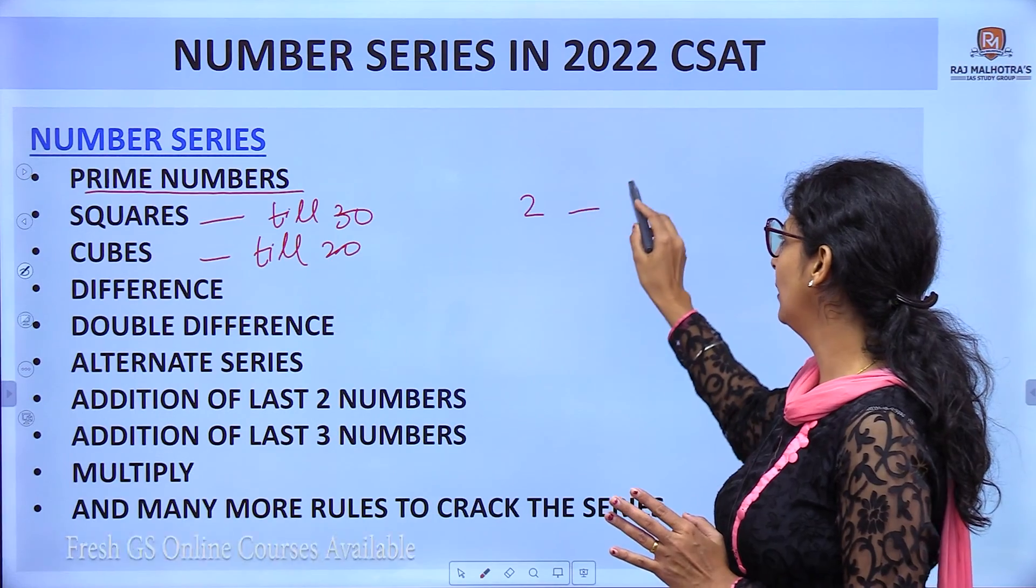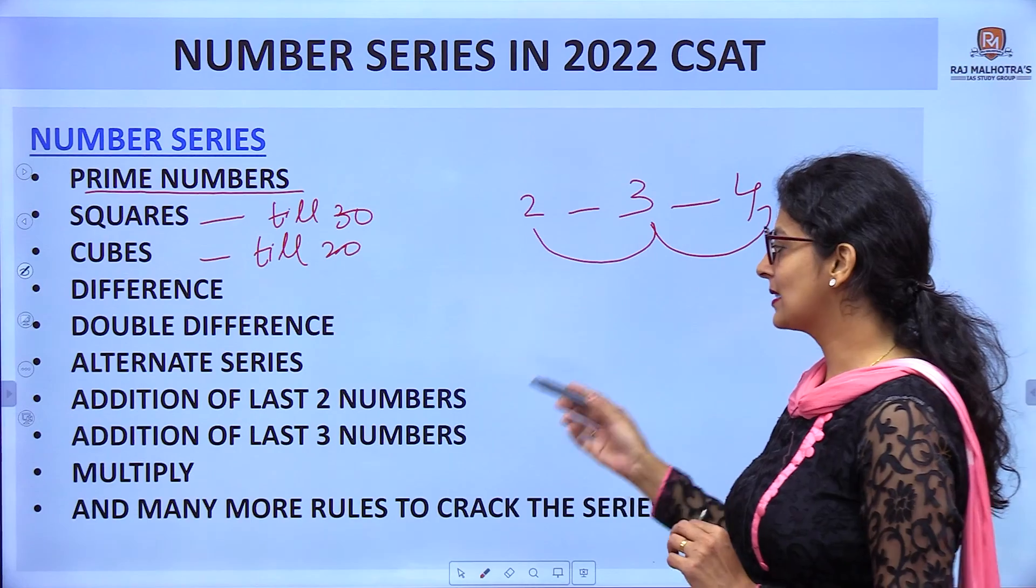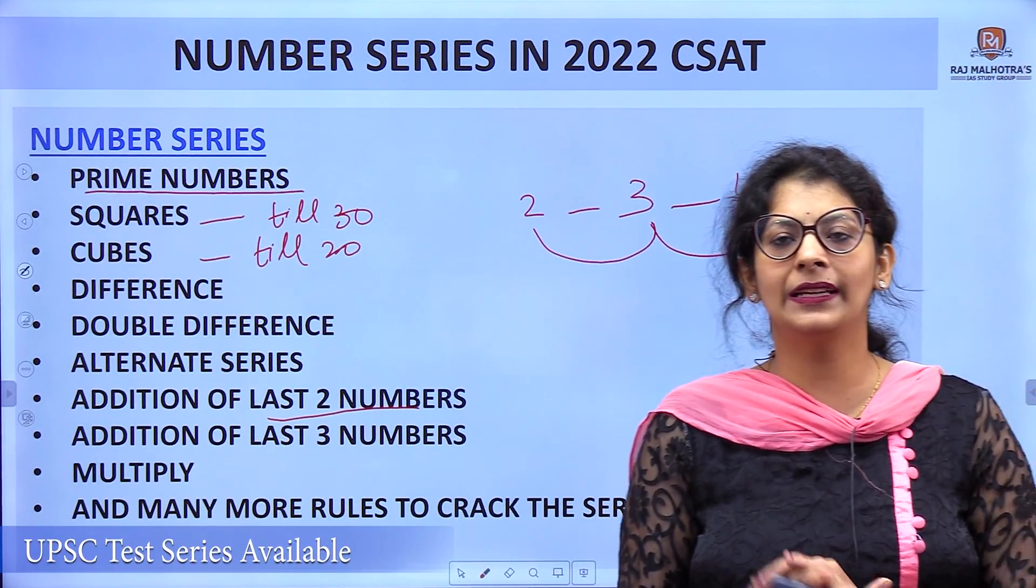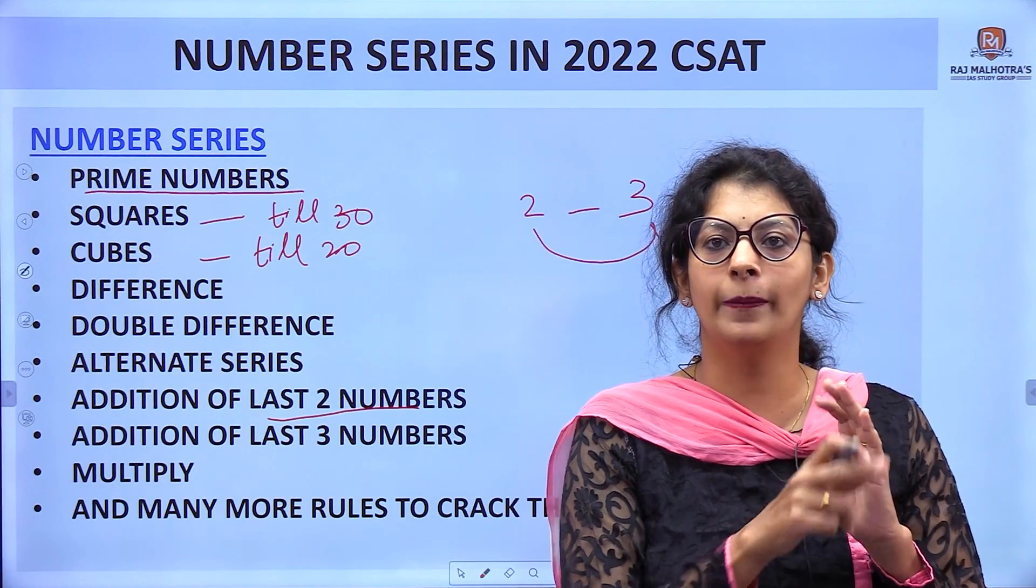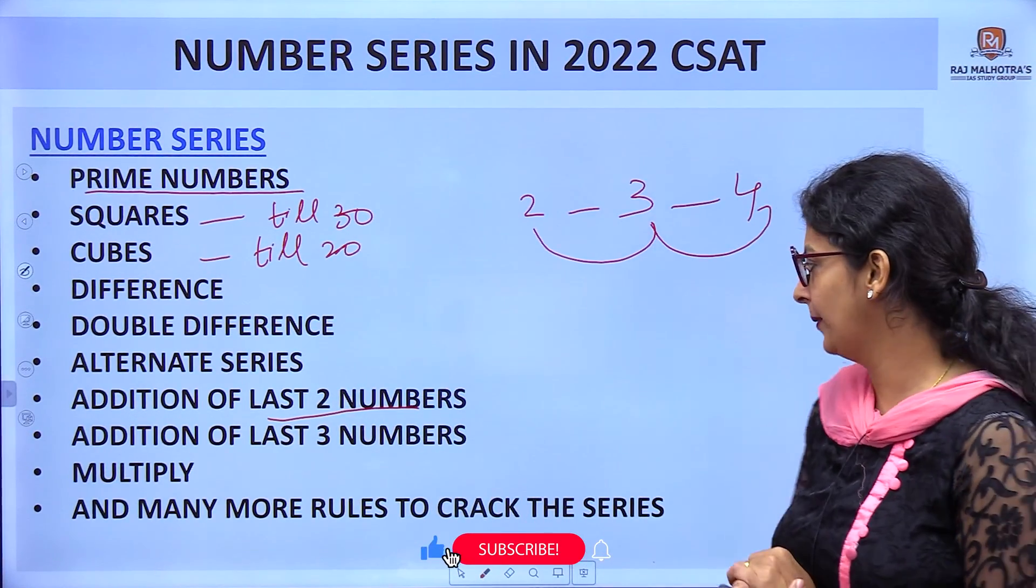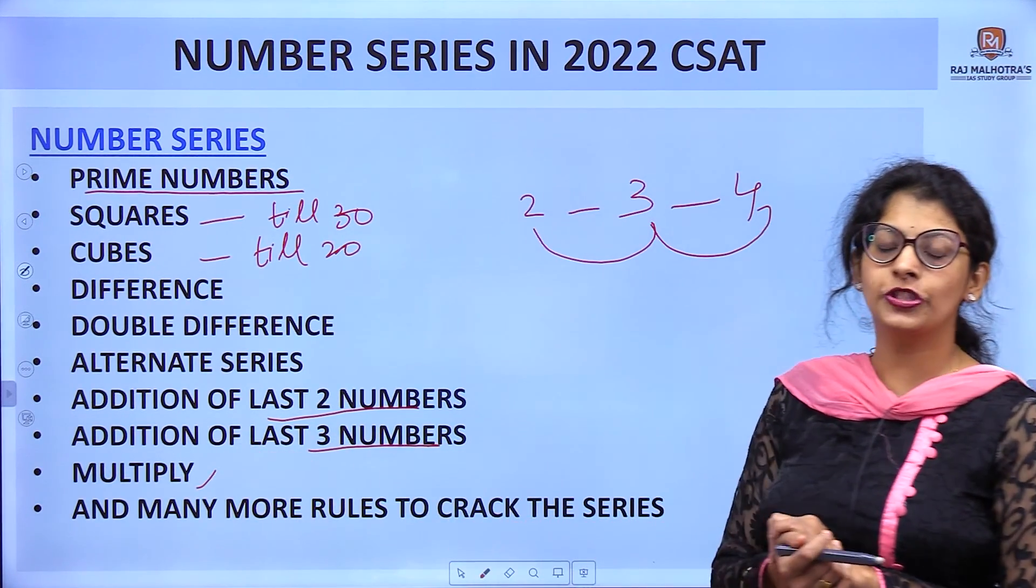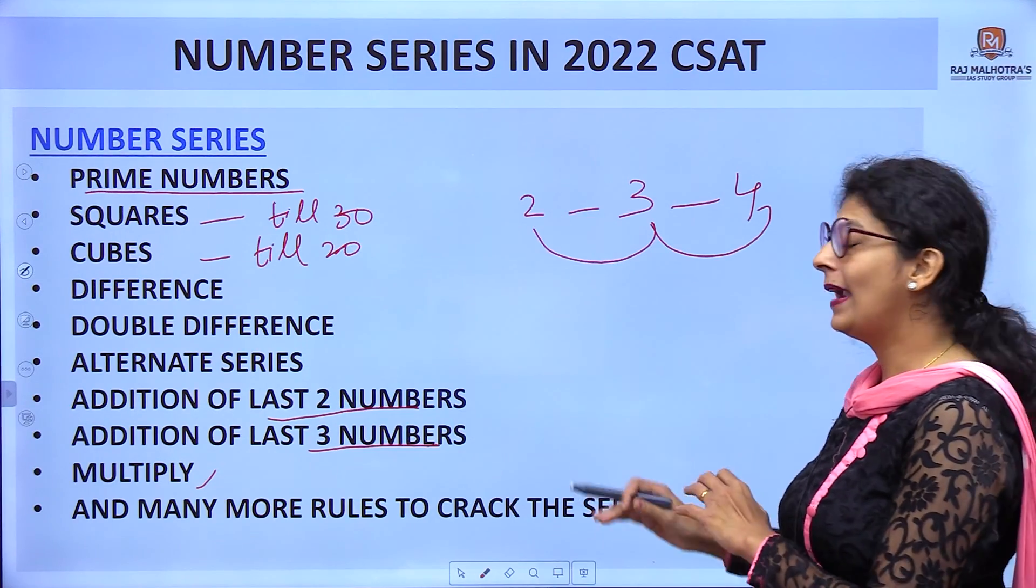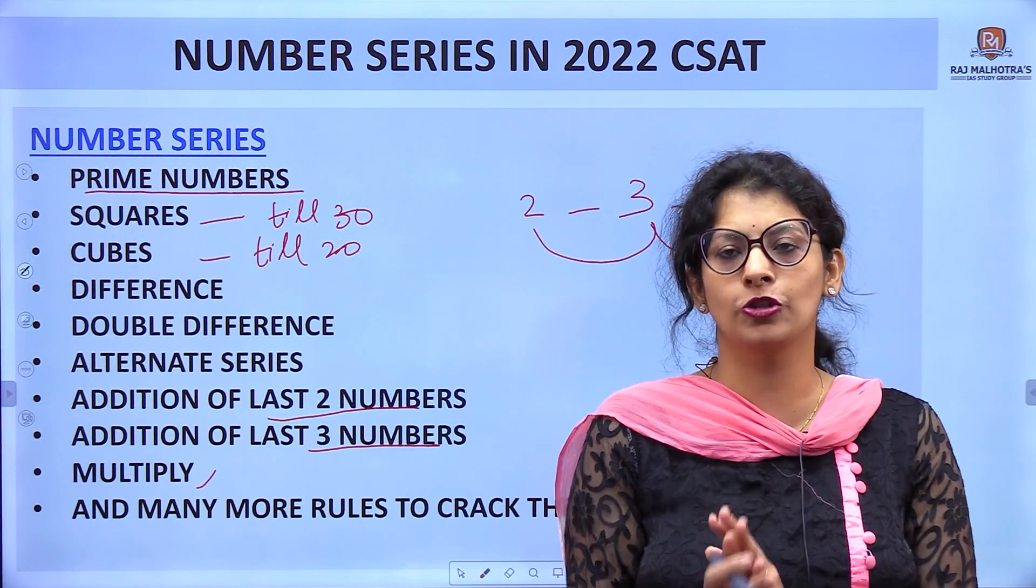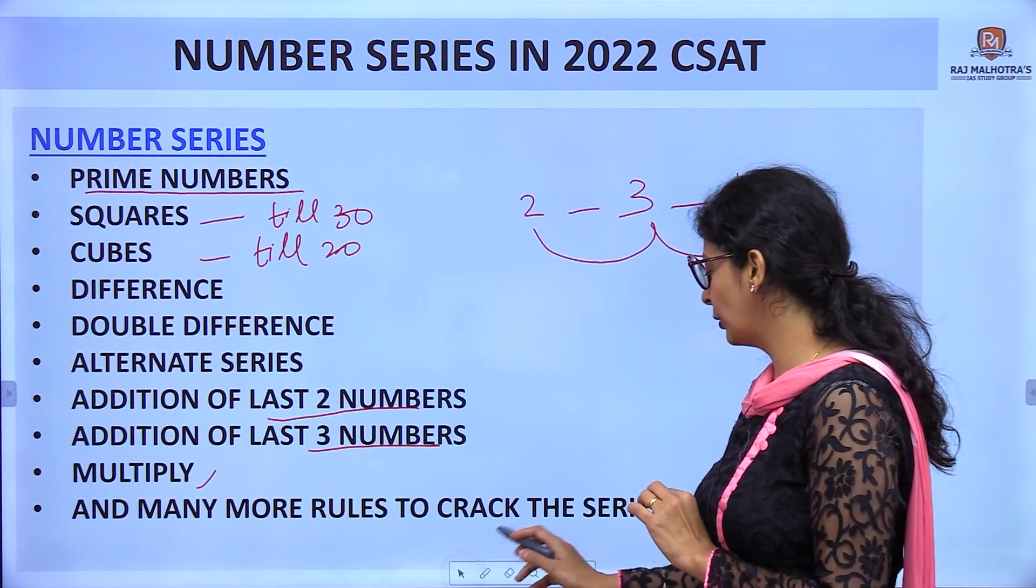Alternate series means there is a pattern with alternate numbers. Next is addition of last two numbers - the third number is the addition of the previous two. Addition of last three numbers is also there. You have to check multiplication also. There are more rules to crack these series. We can solve the question by two or three methods but the answer should be the same.